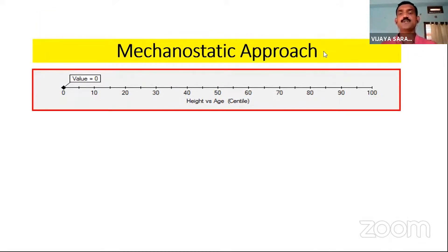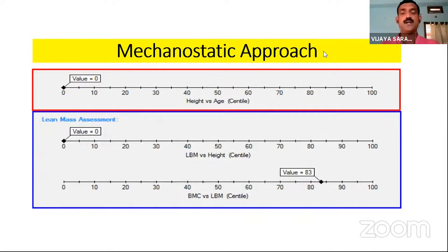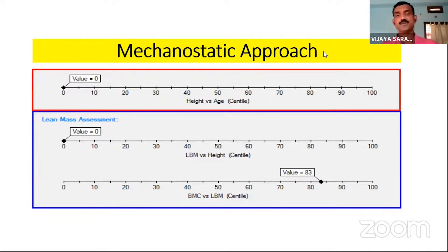Another approach is the mechanostatic approach, where BMD is adjusted for lean body mass. Again, height for age places this girl near the 0 centile. Even adjusting for her short stature, her lean body mass is still too low for her height. When we adjust BMC for lean body mass, she falls on the 83rd percentile — absolutely appropriate for her lean body mass. These approaches can all be used to properly adjust BMD interpretation in very short children.